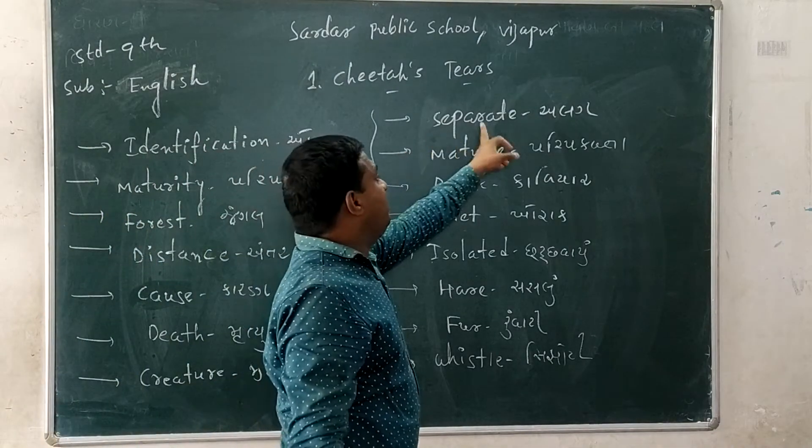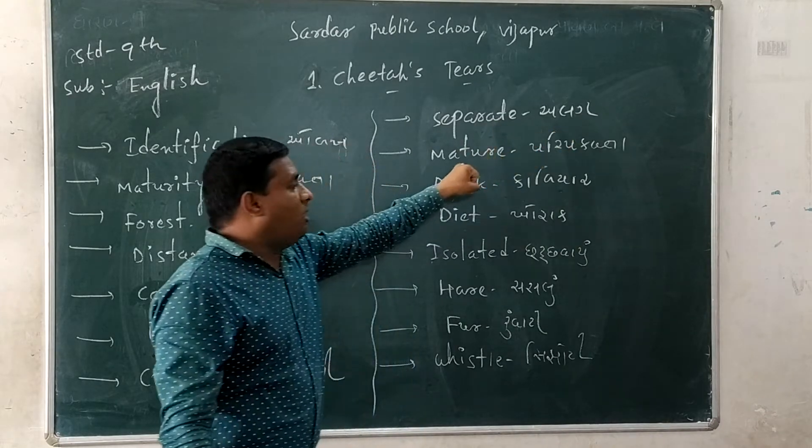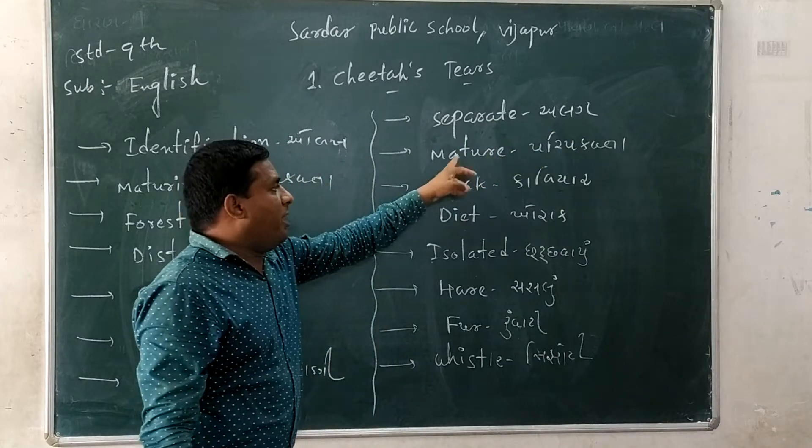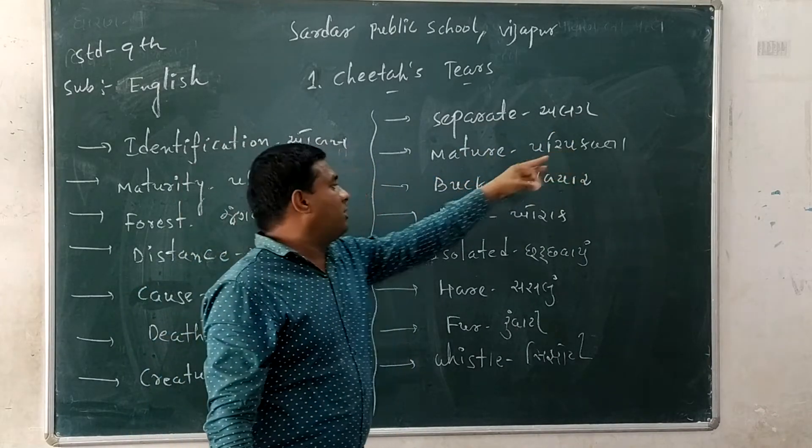Separate — S-C-R-E-S-C-R-E — separate means order. Maturity — M-A-T-U-I-H-R-I — is Kari Mokwata.